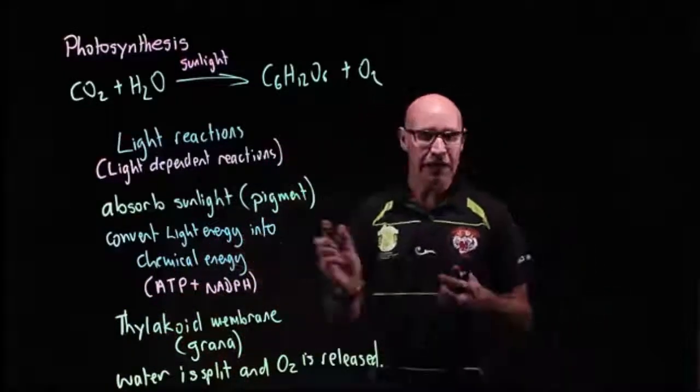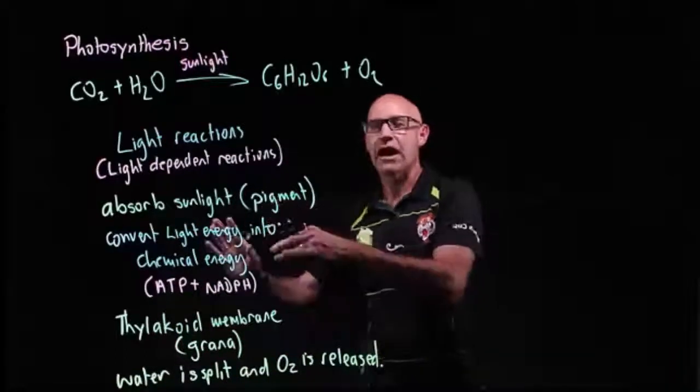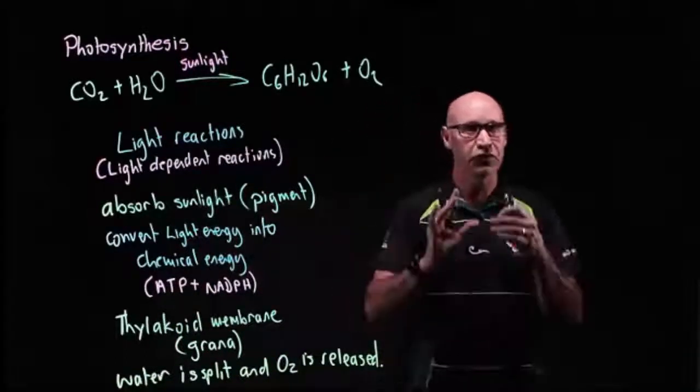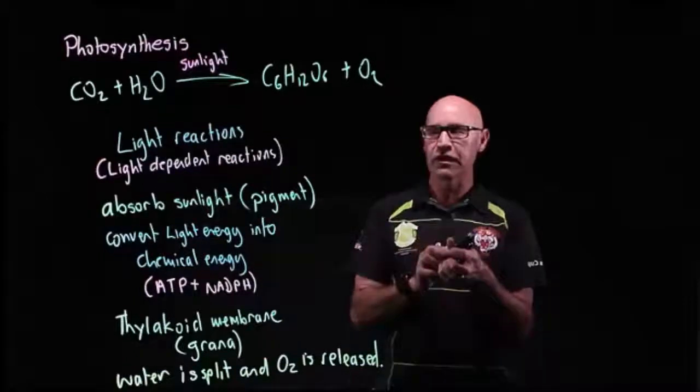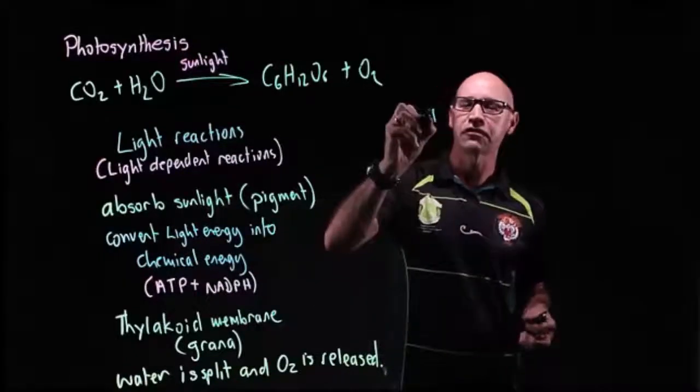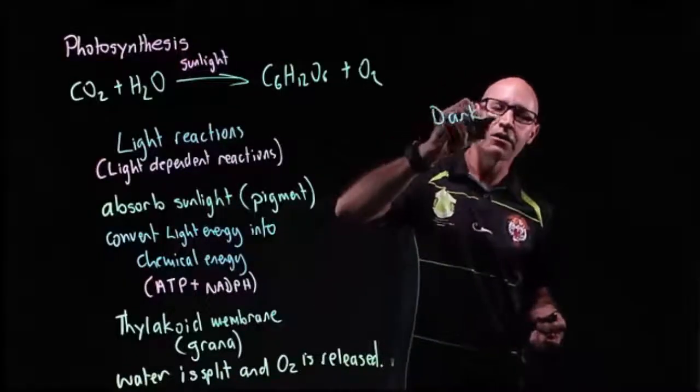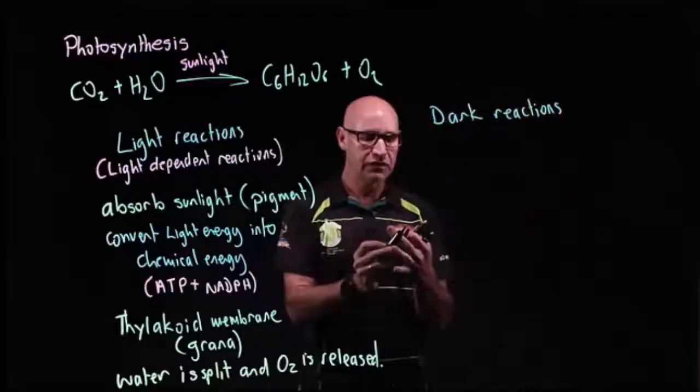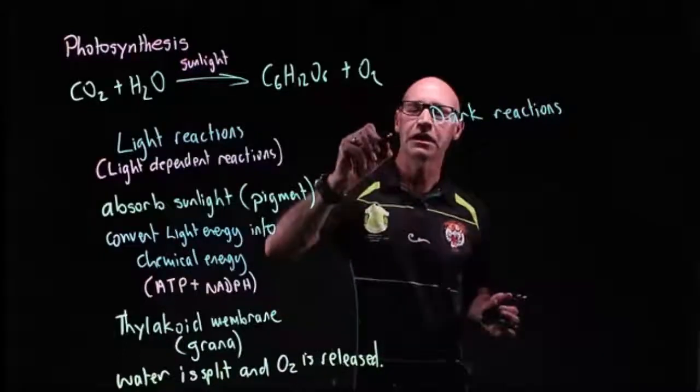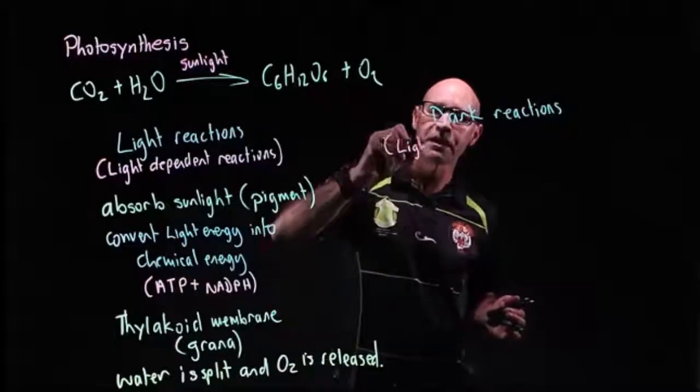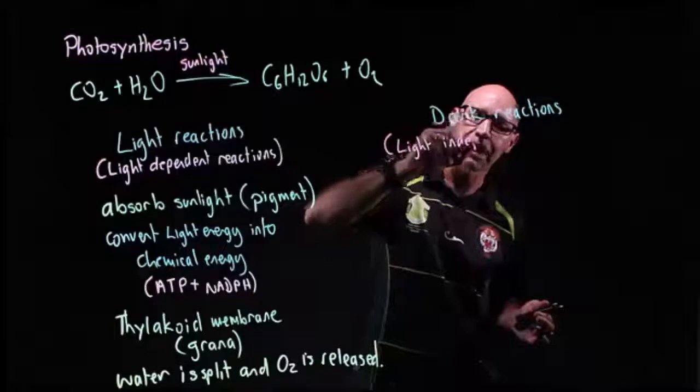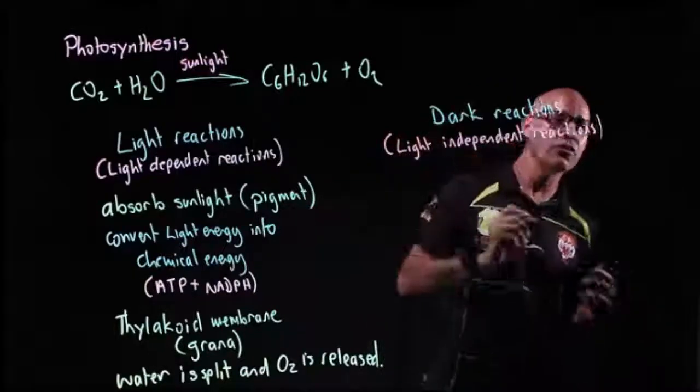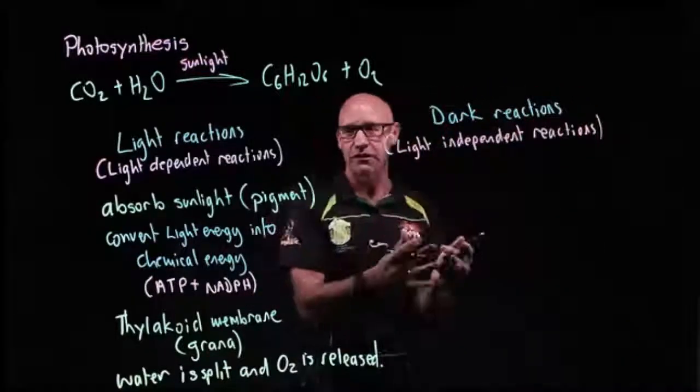So then our ATP and our NADPH go out into the stroma for the second lot of reactions, sometimes called the dark reactions. But that's actually a bit misleading because we're not saying that it only occurs in the dark. More specifically, we would call it the light-independent reactions because they don't require light to occur.